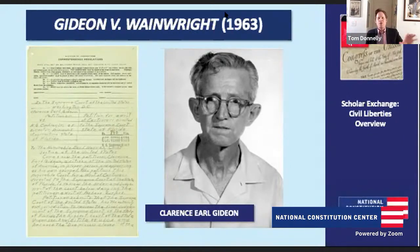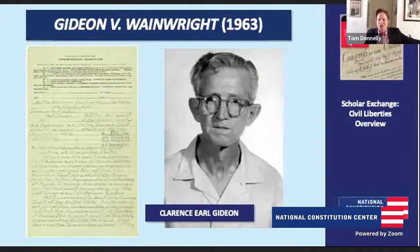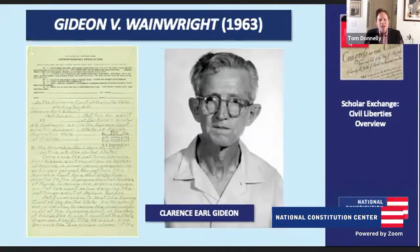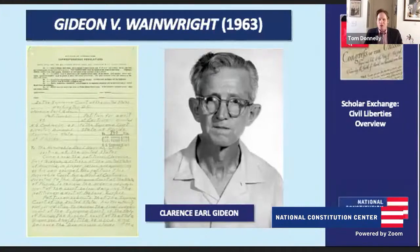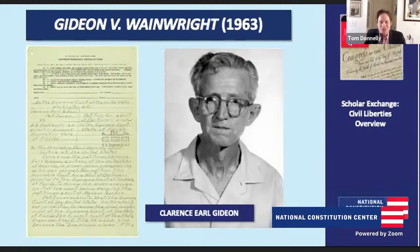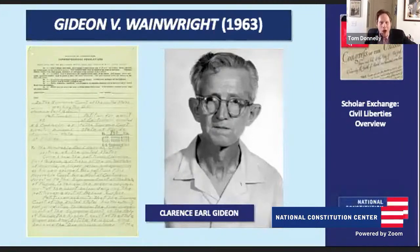Tom Donnelly: What's the crime? Someone robbed a pool hall in Florida. They took some beer, some wine, some change out of the cigarette machine and the jukebox. We're not talking about the crime of the century. Clarence Earl Gideon is accused of this crime. Who is he? He's about 50 years old, already convicted of four different crimes, spent a total of about 17 years in jail prior to this. He's sort of a grifter, a gambler, a petty criminal. People who knew him in prison would say he breaks the law sometimes, but he's fundamentally not dangerous — maybe misunderstood. So here's Gideon: accused of this crime, a lifelong criminal.